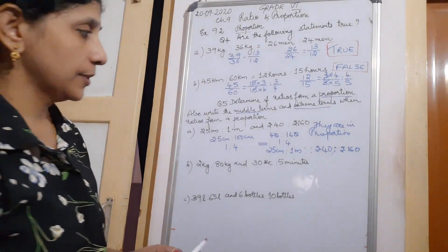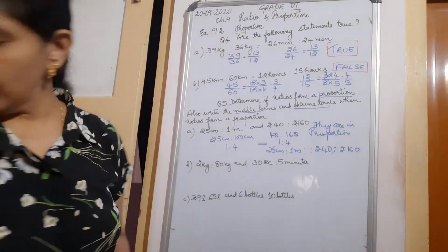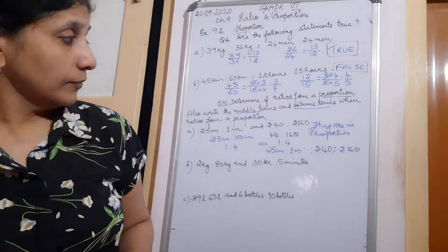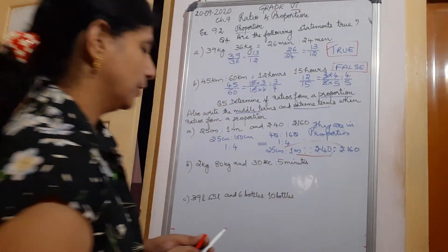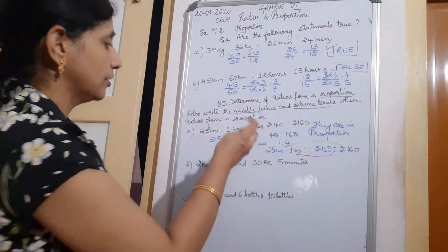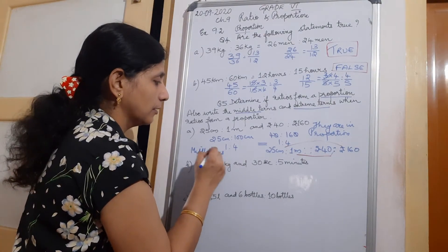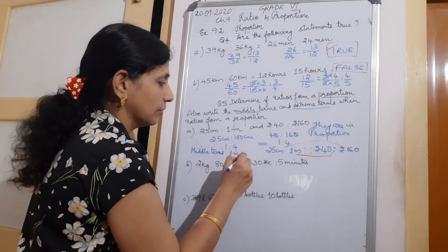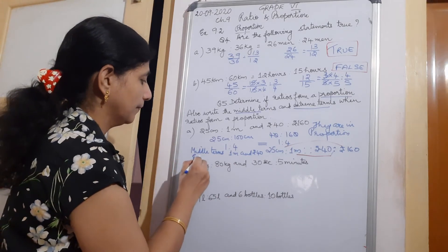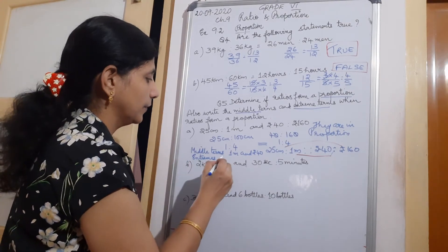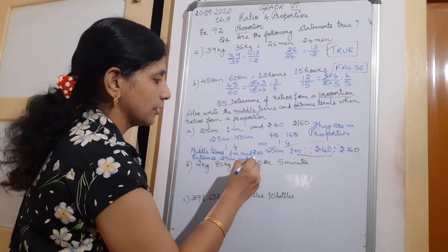Now, which are the middle terms and which are the extremes? The middle terms are 1 meter and Rs. 40. The extremes are 25 centimeters and Rs. 160. Middle terms are the inner two values and extremes are the outer two values in the proportion.